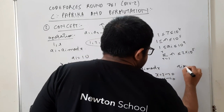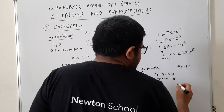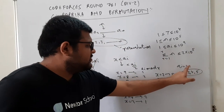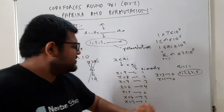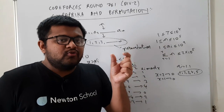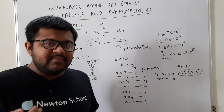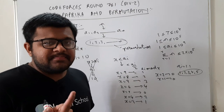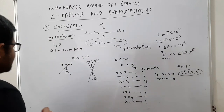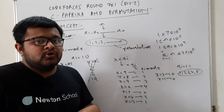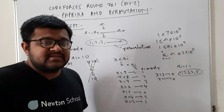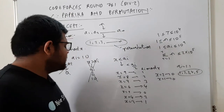यह पहली property हो गई। दूसरी property: अगर कोई element already 1 to N के बीच में है और उसका single occurrence है, तो उसको change नहीं करेंगे। For example, N = 10 है और A[i] = 12 भी है और A[i] = 5 भी है। अगर 3 missing है तो 5 को 3 में convert करने की बजाय, क्योंकि 12 को directly 3 में convert किया जा सकता है, हम 5 को as-is रखेंगे और 12 को 3 में convert करेंगे — इसमें एक step लगेगा।